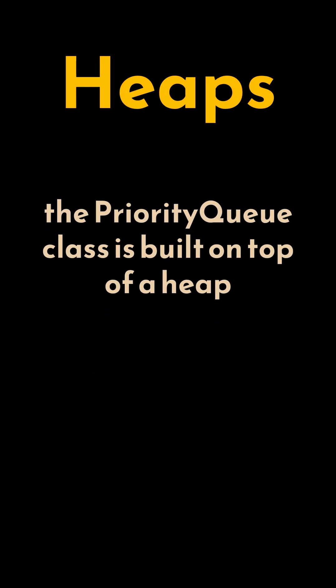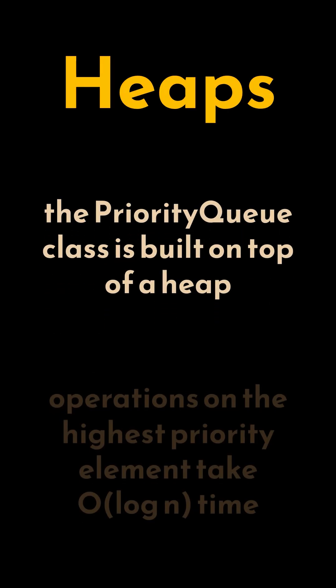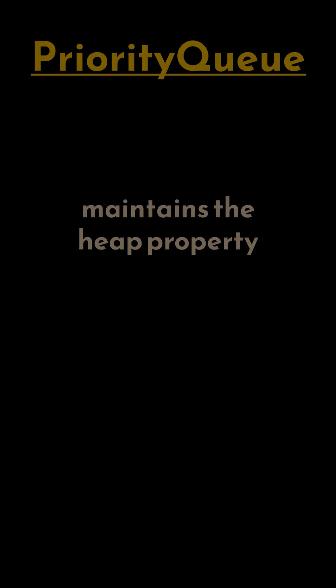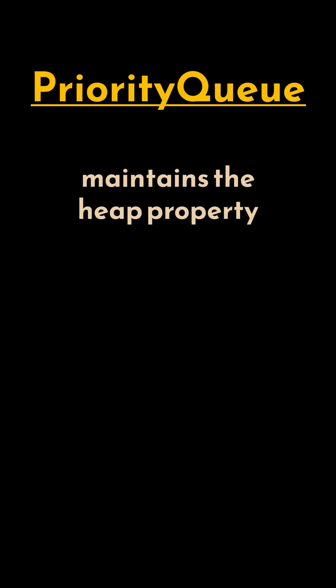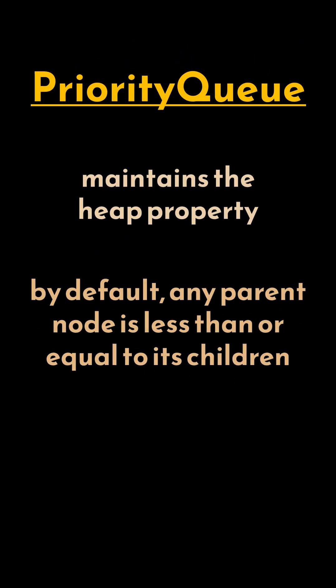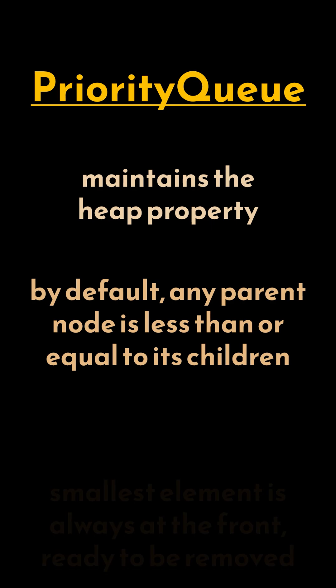In Java, the priority queue class is built on top of a heap, which means that inserting elements and removing the element with the highest priority, or the root of the heap, takes O(log N) time. The priority queue automatically maintains the heap property, meaning by default any parent node is less than or equal to its children.